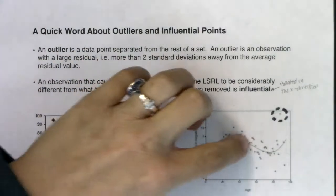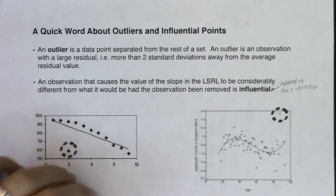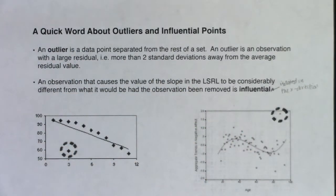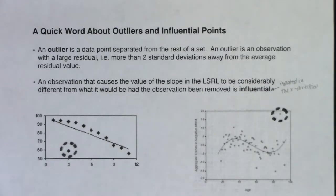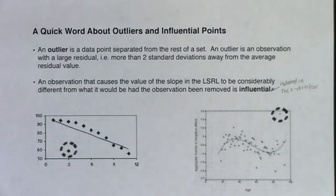We're going to go through a few plots and try to determine: are those circled data points outliers? Are they influential? Are they neither, or are they both? We'll do this without formulas for now, and then I'll show you how to use your calculator to check for outliers.